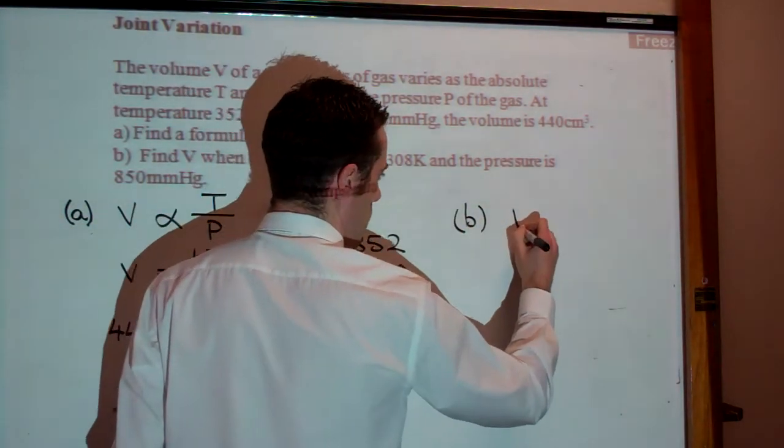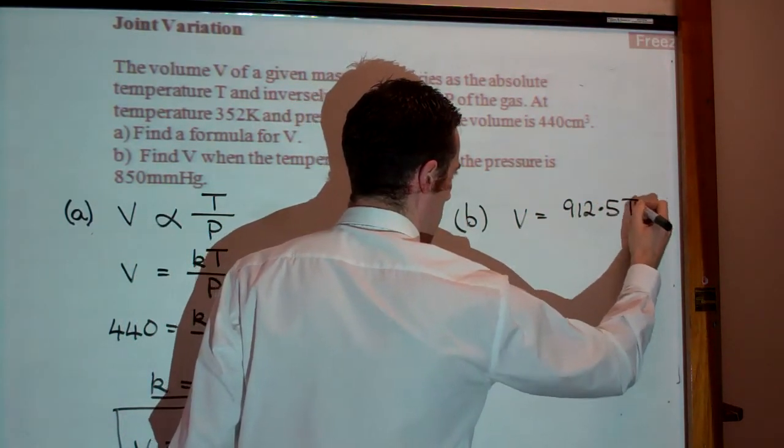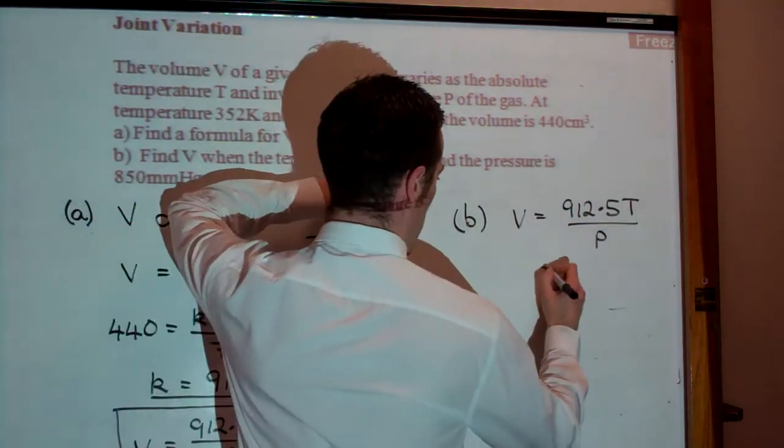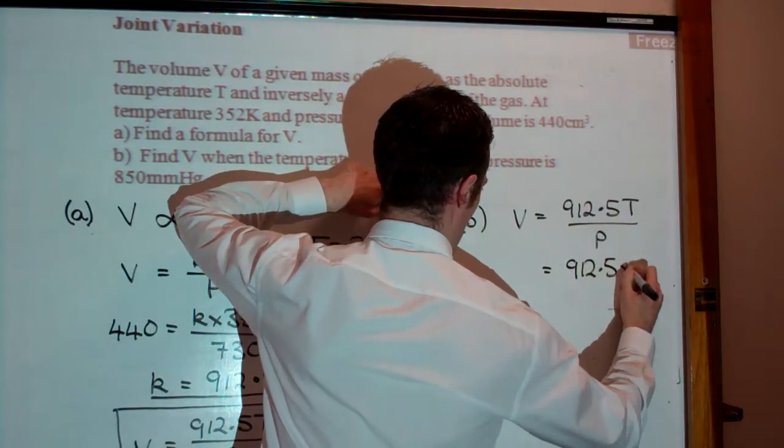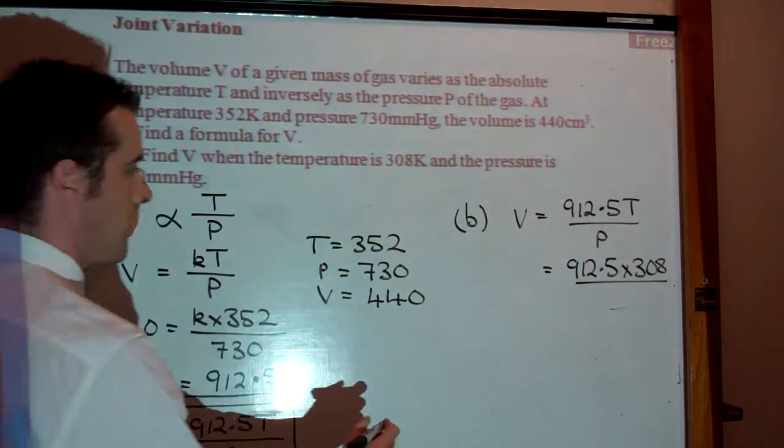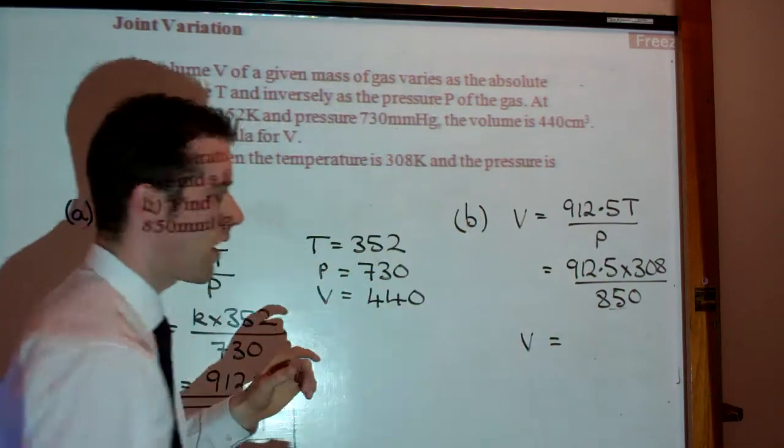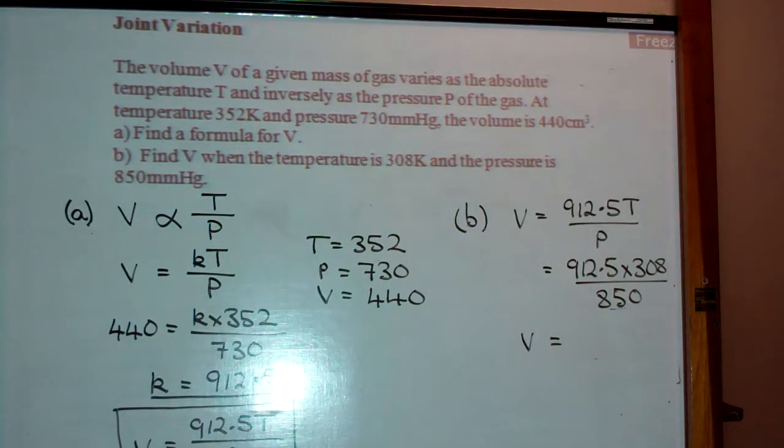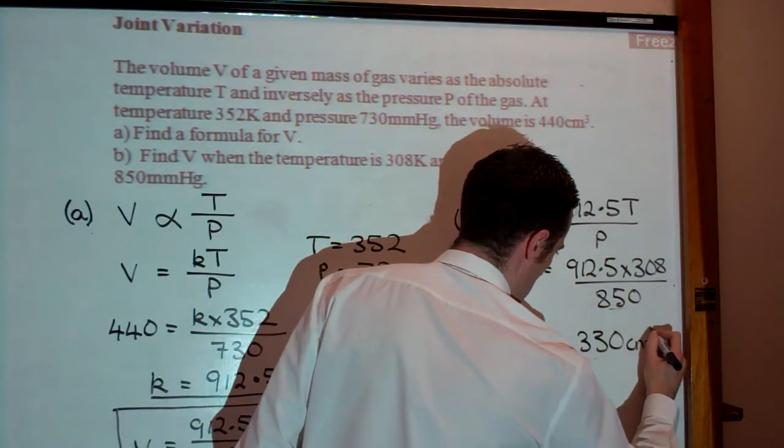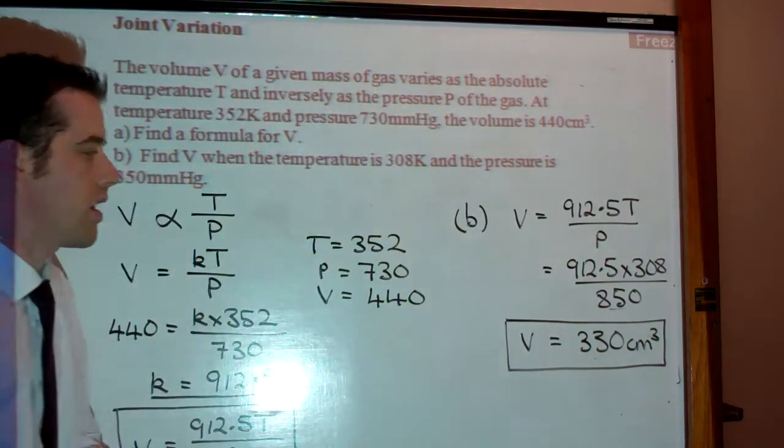So if we look at B, that's going to be nice and quick. So we're using our formula, which is 912.5 T over P. We're told temperature in this case is 308, we're told pressure is 850. So we take our calculators out, put the information in, we work out the calculation, and we get an answer of 330 centimetres cubed.